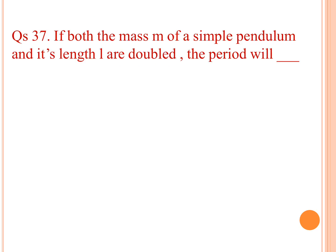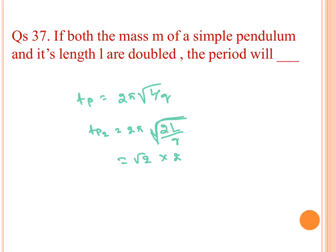If both mass m of a simple pendulum and its length l are doubled, what will the period be? The time period of a simple pendulum is 2π√(l/g). It is independent of mass. With length doubled to 2l: T' = 2π√(2l/g) = √2 · 2π√(l/g) = 1.414 · Tp.